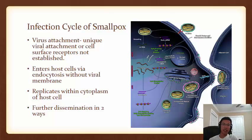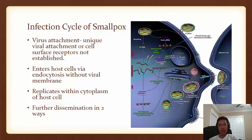After replication, the virus can spread to other cells in one of two ways. The first is if the cell ruptures and viral material is released into the surrounding environment. The second is if the replicated virus enters the trans-Golgi network, which processes the viral material into an immature virion and then an intracellular enveloped virus, which is then released and can be taken up by an adjacent cell, spreading the infection further.